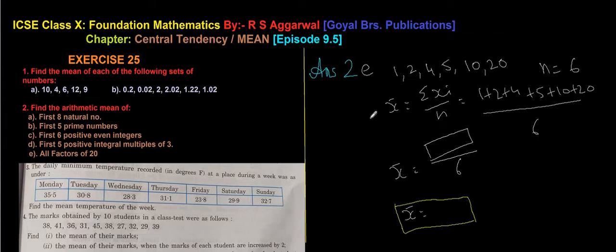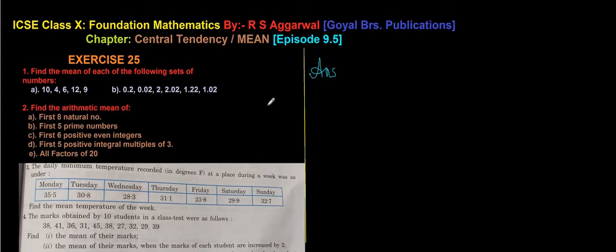Question 3: The daily minimum temperature recorded in degrees Fahrenheit at a place during a week was as follows — Monday: 35.5, Tuesday: 30.8, Wednesday: 28.3, Thursday: 31.1, Friday: 23.8, Saturday: 29.9, Sunday: 32.7. Find the mean temperature of the week.